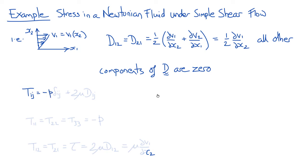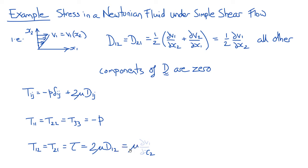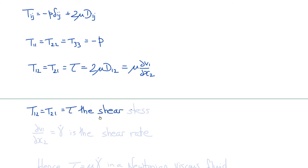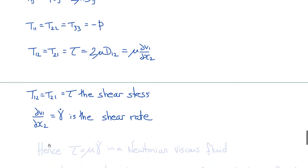Writing the constitutive law for an incompressible Newtonian viscous fluid — T_ij equals minus p delta_ij plus 2 mu D_ij — we get T_11, T_22, and T_33 equal simply minus p. The shear stresses T_21 and T_12 (labeled tau) equal 2 mu times D_12, where D_12 is one-half del v1 / del x2, leaving tau equals mu times del v1 / del x2. Del v1 / del x2 is sometimes called gamma dot, the shear rate. Hence, for an incompressible Newtonian viscous fluid, tau equals mu times gamma dot, just as we originally posited.